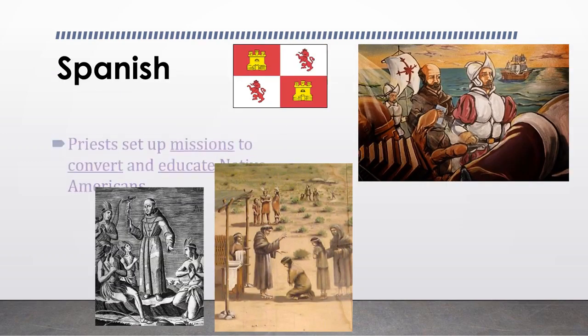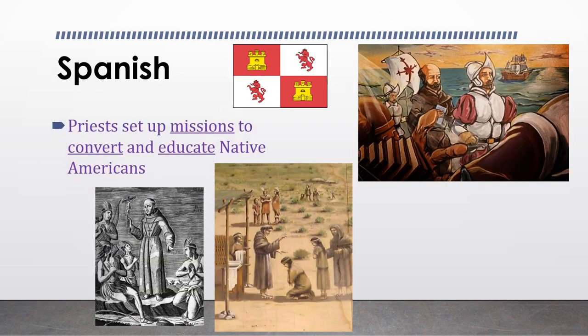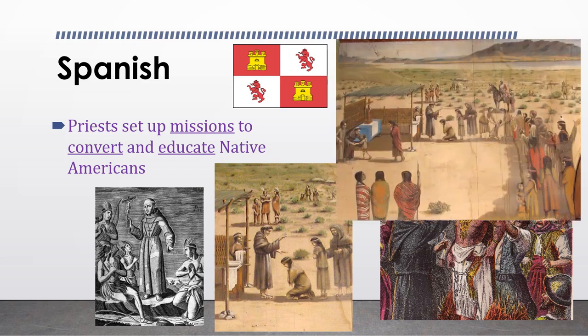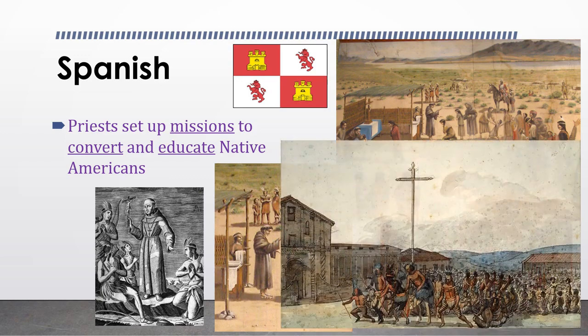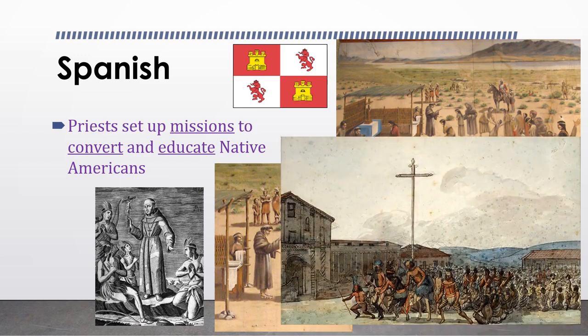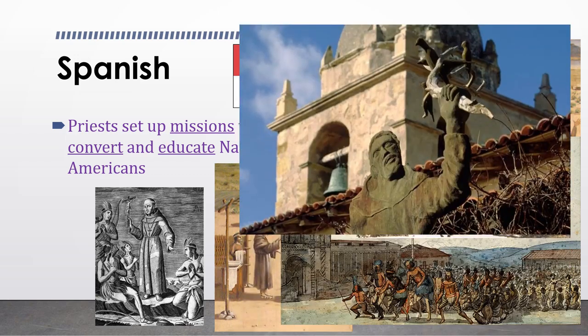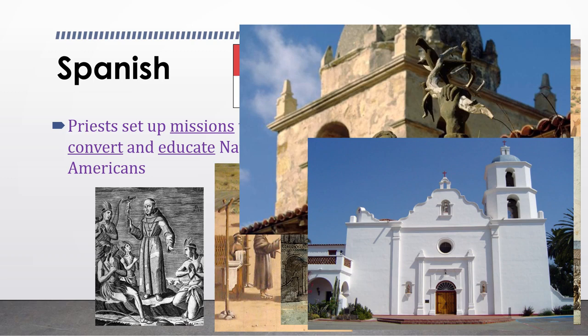The Spanish were devoted to their religion, Catholicism. So when they arrived, they brought priests with them to set up missions all over North America. The Spanish planned to convert and educate the Native Americans because they believed it was their duty to spread their religion throughout the world. The Spanish conquistadors would often force the Native Americans to convert to Christianity, killing those who did not make a change in faith.